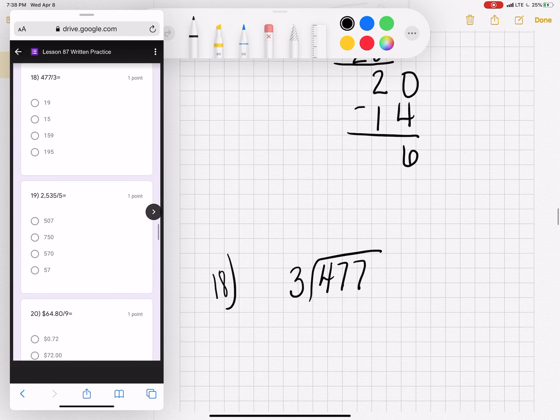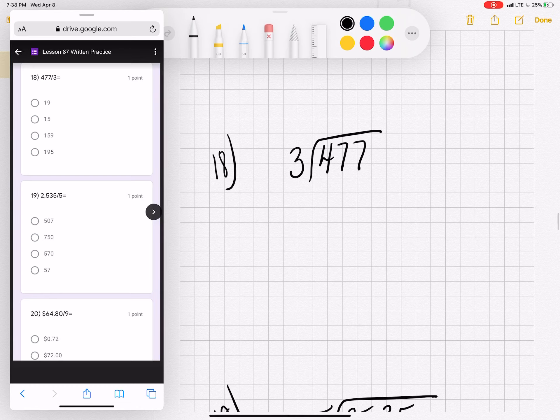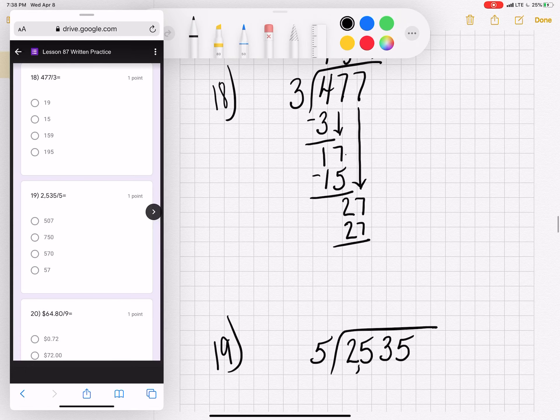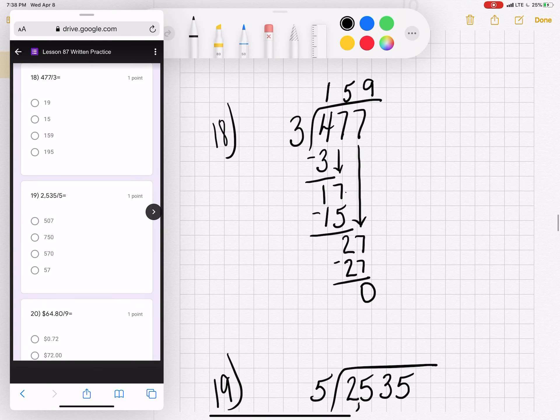Number eighteen. Four hundred seventy-seven divided by three. Three goes into four one time. One times three is three. Subtract. Four minus three is one. Bring down your seven. How many threes are in seventeen? I know that three times five is fifteen. Seven minus five is two. And bring down a seven. Three times what is twenty-seven? That is nine times three equals twenty-seven. It works out equally with no remainder. And your answer is one hundred fifty-nine.